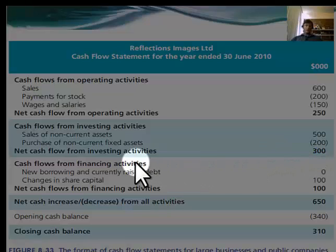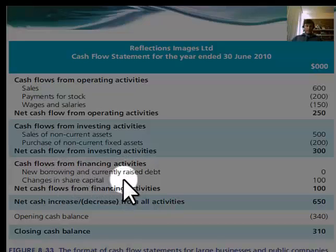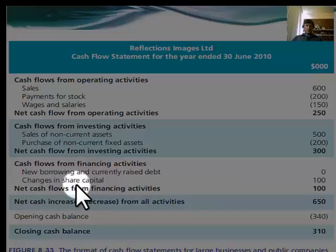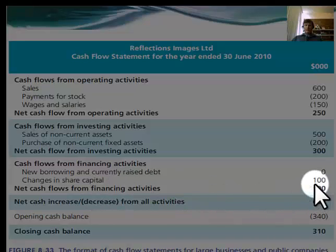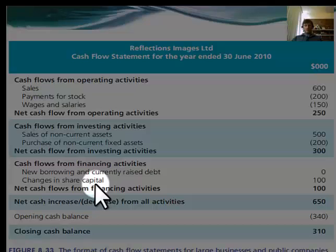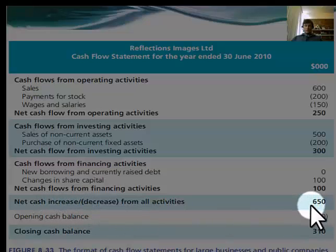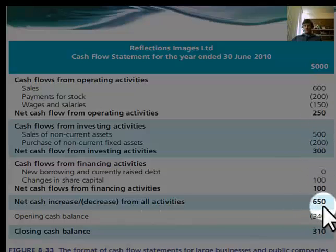The last section is financing activities. They include things like borrowings — in this case we haven't had any new borrowings raised, so that's zero. Changes in share capital involves the amount of capital put in by the owners. Here, $100 has come in from shareholders to increase the cash flow. We can also have outflows, for example if owners take drawings out of the business for their living expenses. The total net increase is $250 plus $300 plus $100, giving a total of $650.